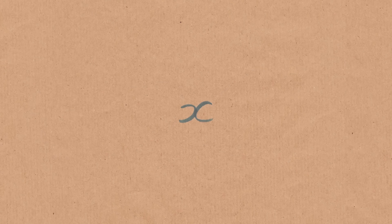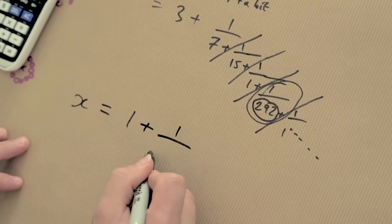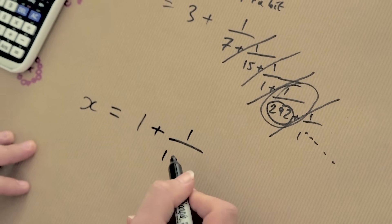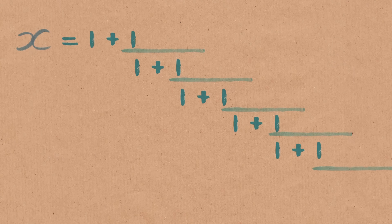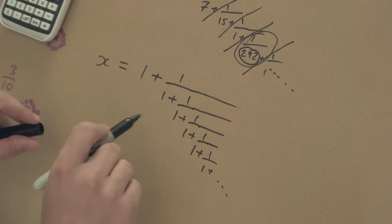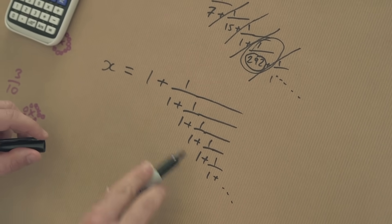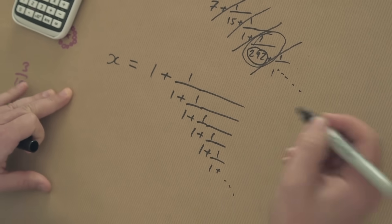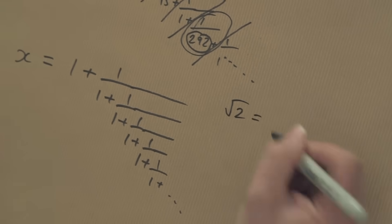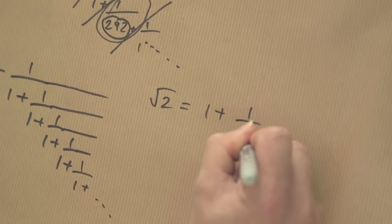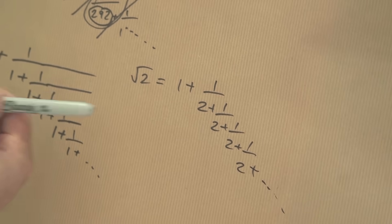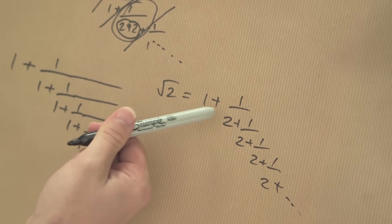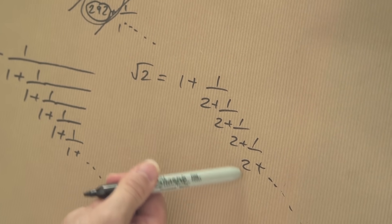Looking at the continued fraction, the question is: what would the most irrational number look like? It would be the one whose continued fraction has no large numbers in it — just 1s throughout: 1 plus 1 over (1 plus 1 over (1 plus 1 over ...)) and so on. Root 2 has a continued fraction of 1 plus 1 over 2, plus 1 over 2, repeating — which is why root 2 looked pretty good on our diagram, because although the numbers aren't the smallest, they stay small and consistent.